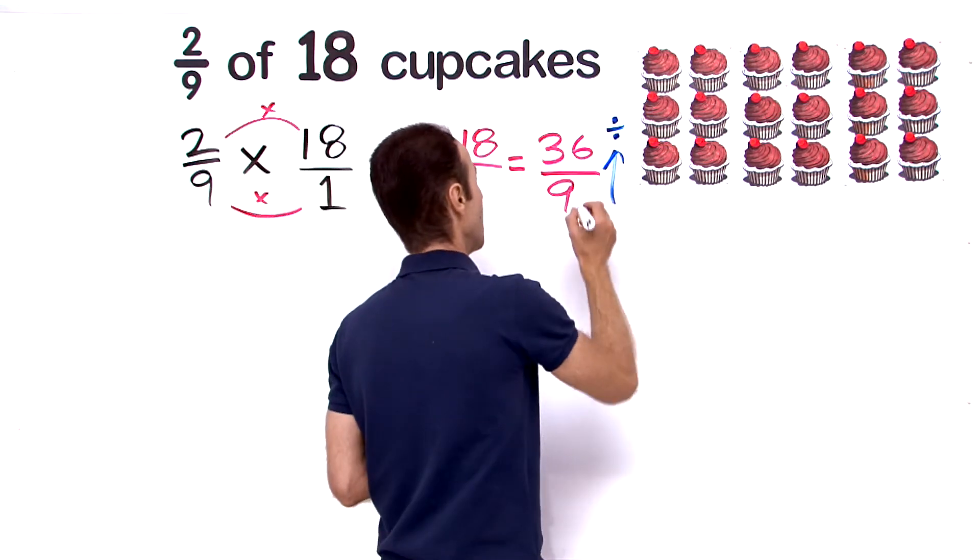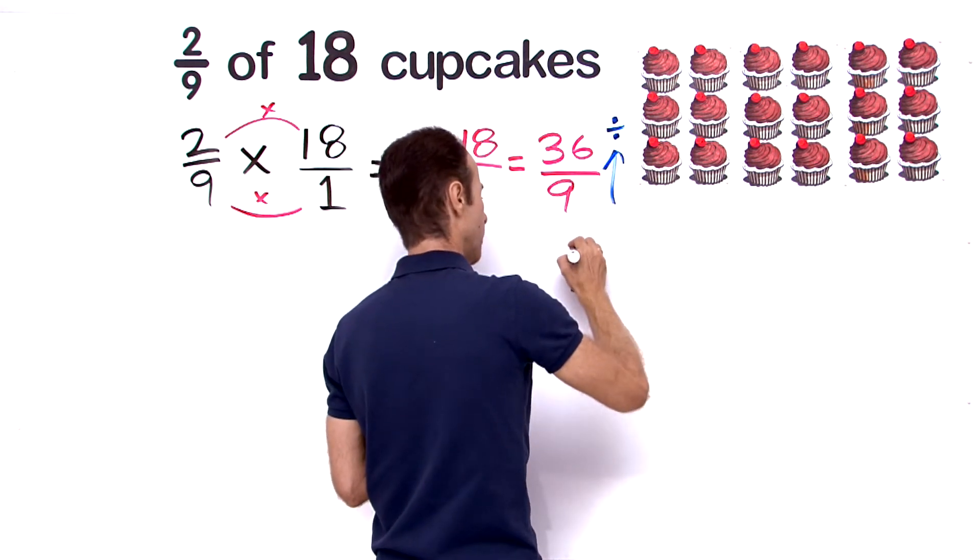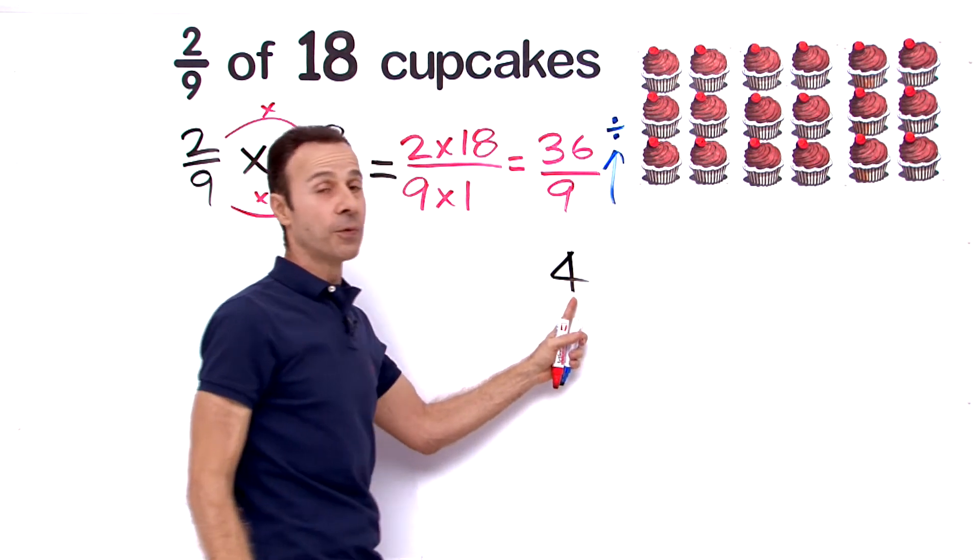Alright, let's divide 9 into 36. 9 into 36 goes how many times? It goes in 4 times. Therefore, 4 cupcakes.